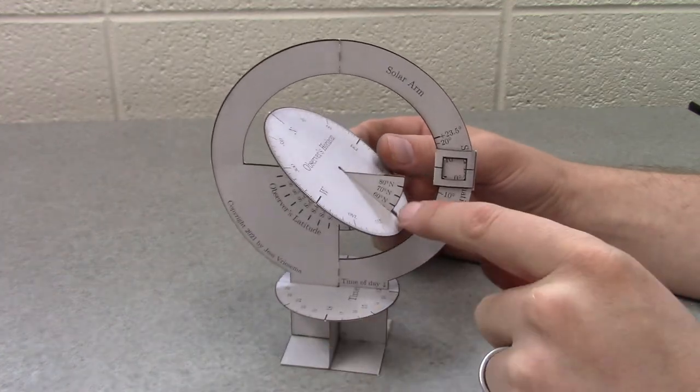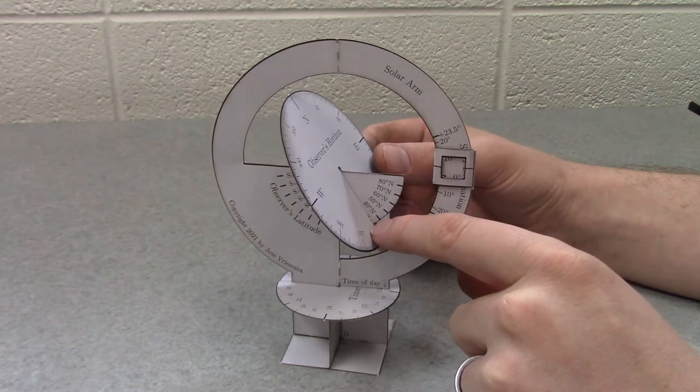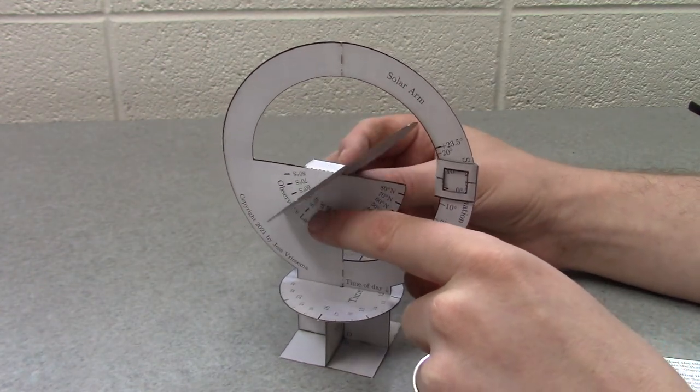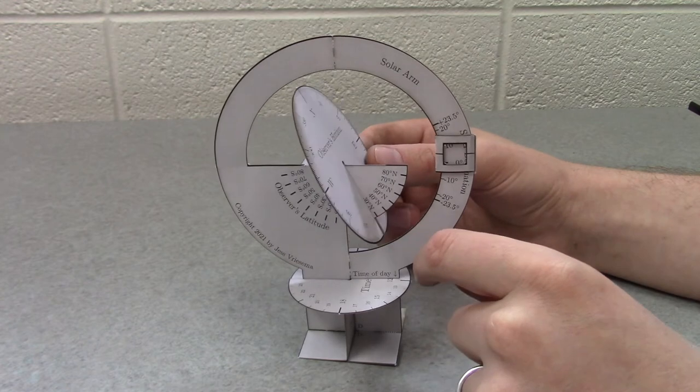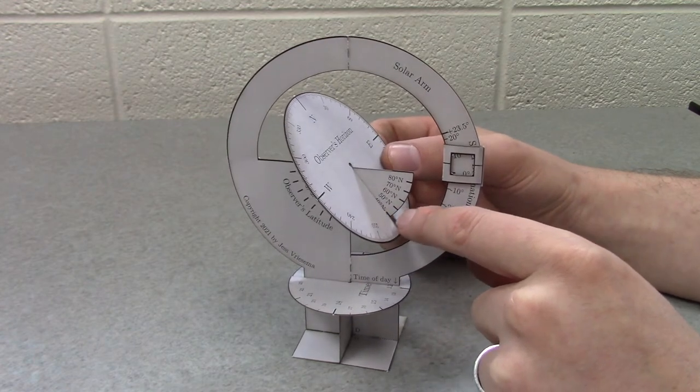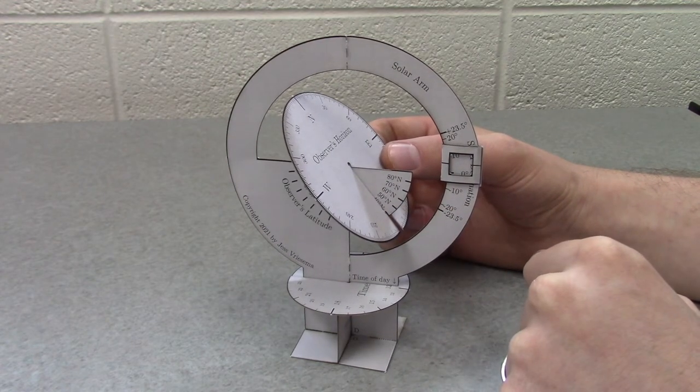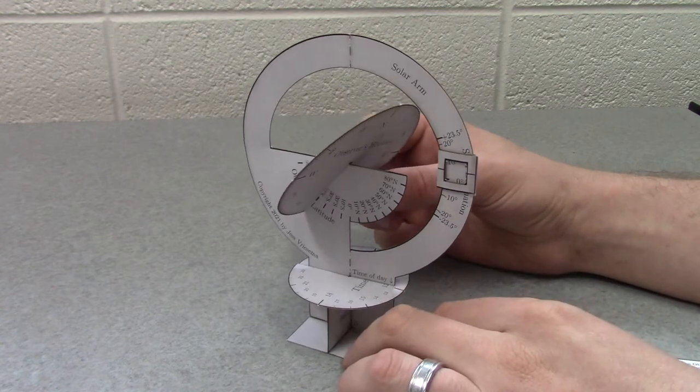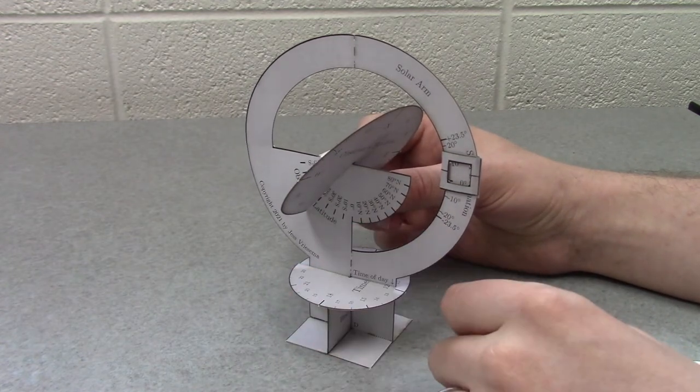By rotating this disk so that this part right here goes to one of these latitudes you can set the observer's latitude. So for instance here is about 40 degrees north latitude. Or here would be 40 degrees south latitude.